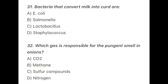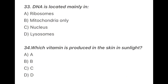Question 31: The bacteria that converts milk into curd are — the correct option is C — Lactobacillus. Question 32: Which gas is responsible for the pungent smell in onions? The correct option is C — sulfur compounds. Question 33: DNA is located mainly in — the correct option is C — the nucleus.